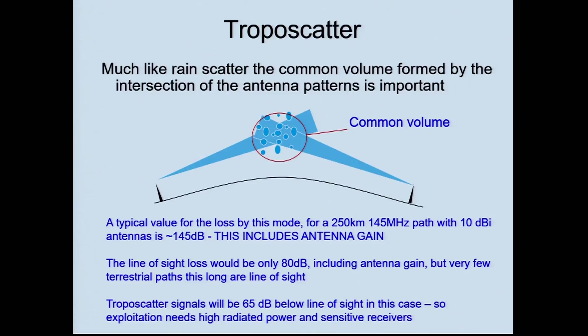If it were line of sight, you'd only have 80 dB path loss — but the point is it's not line of sight in most cases. Troposcatter signals are maybe 65 dB down on line of sight. What does that tell us? It tells us we need to do something about the 25 watt ERP limit for DATV on two metres, because this mode is always there. If we want to receive the 250-kilometre prize, it would help if we could use a bit more power. Although troposcatter goes above the horizon, the loss increases very dramatically as the angle goes up — so it's really good to have a low horizon when trying to make DX records, which is why people on hills do quite well.